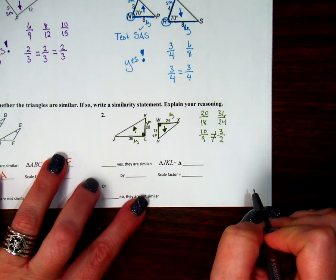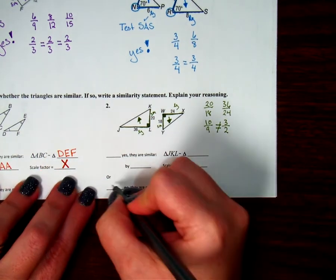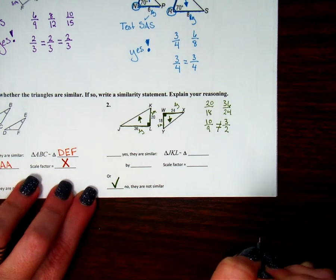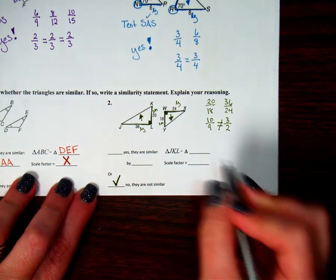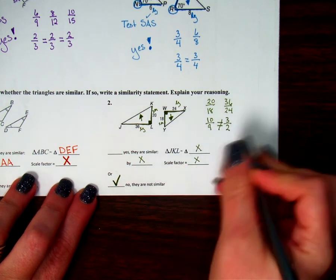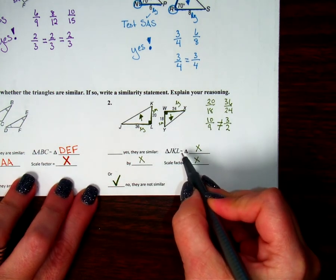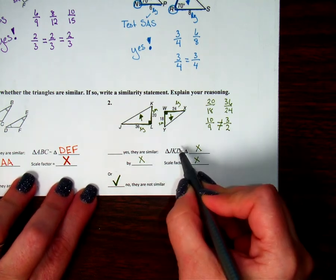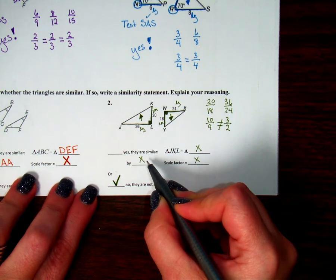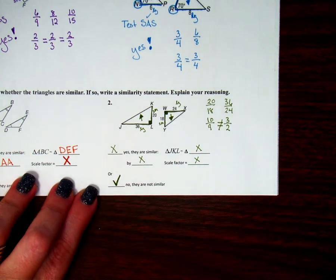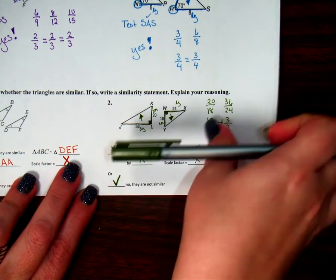That means my sides are not proportional. So I'm going to say no, these are not similar. Which means if this was on my assessment, I'm going to put X's for each of these. Because I can't fill them out. I can't write a similarity statement if I don't have similar triangles. Even though we tested SAS, they're not similar by SAS. And then there is no scale factor if you don't have similar figures. So the rest of those, I can just put X's because none of them apply to this situation.